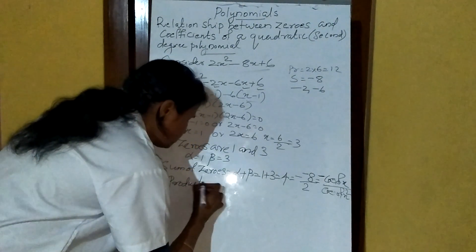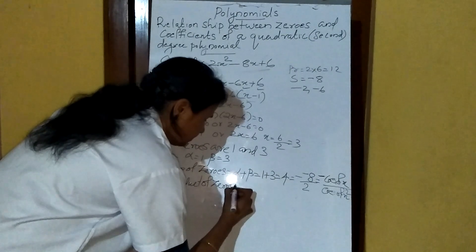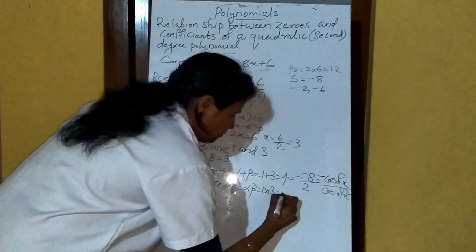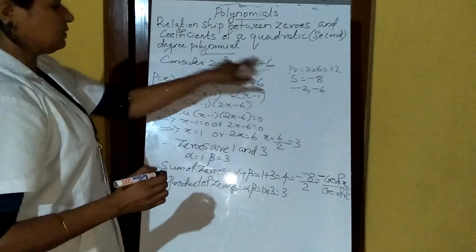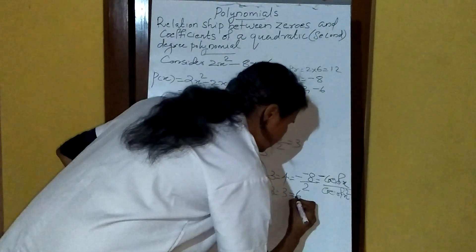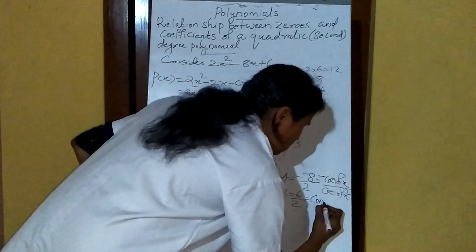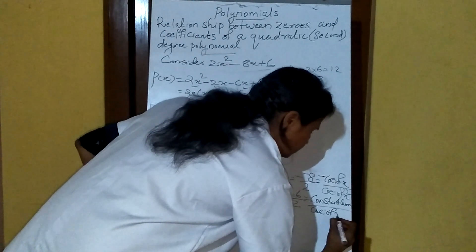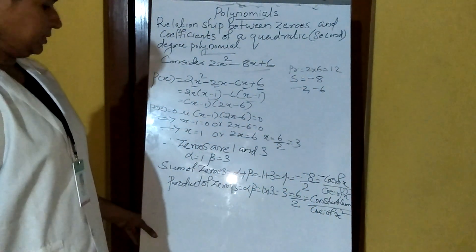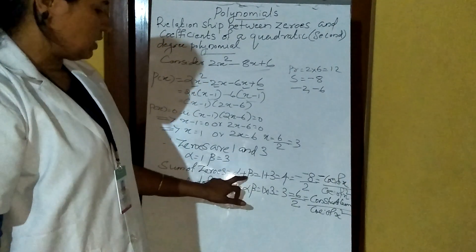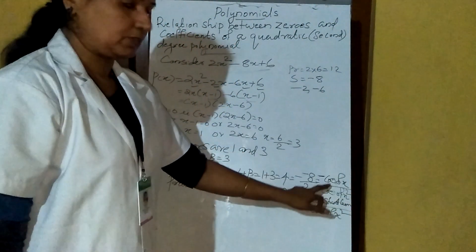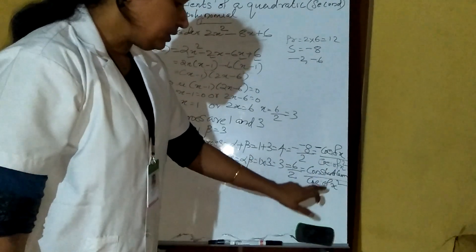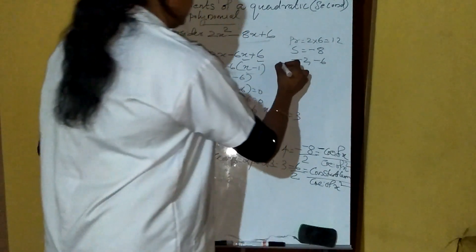Product of zeros: alpha times beta equals 1 times 3 equals 3, which equals 6 divided by 2. So 3 equals 6 by 2, which equals constant term divided by coefficient of x squared. That means product of zeros, alpha times beta, equals constant term divided by coefficient of x squared.